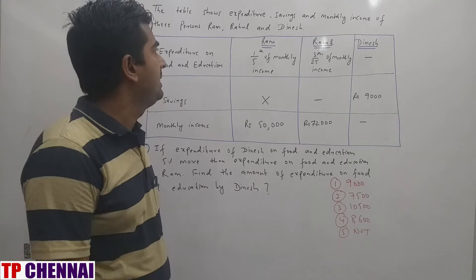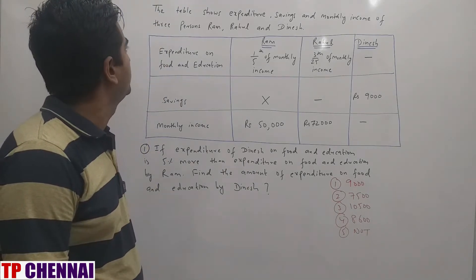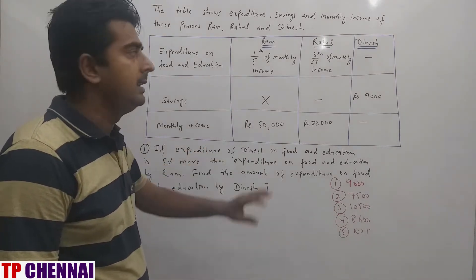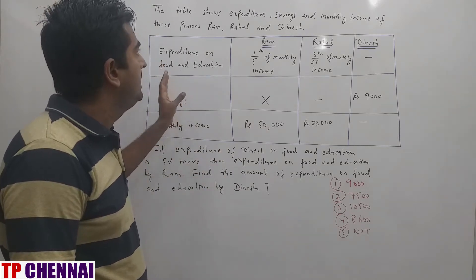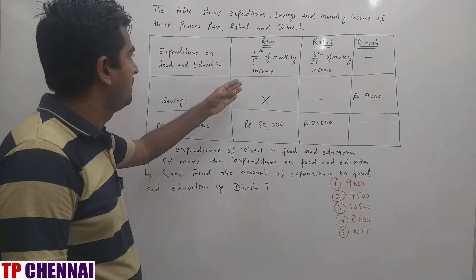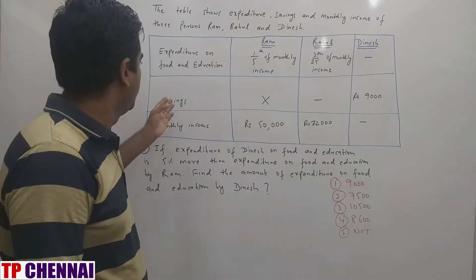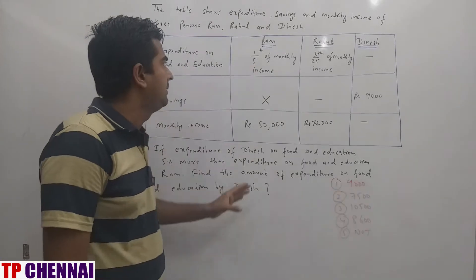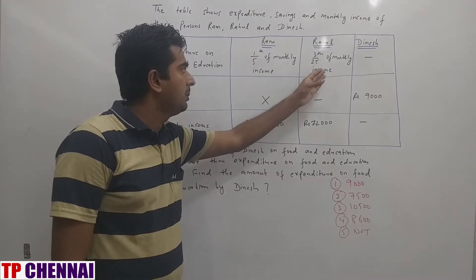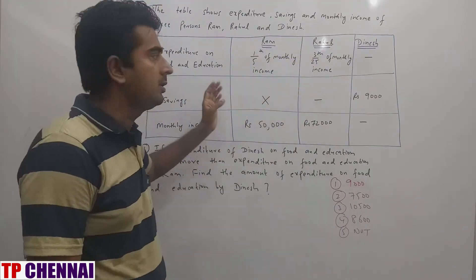Let me read this DI. The table shows expenditure, savings and monthly income of 3 persons: Ram, Rahul and Dinesh. For Ram, expenditure on food and education is 1/5th of monthly income; for Rahul it is 3/25th of monthly income; and for Dinesh it is a dash. This is all about expenditure on food and education for these 3 persons.